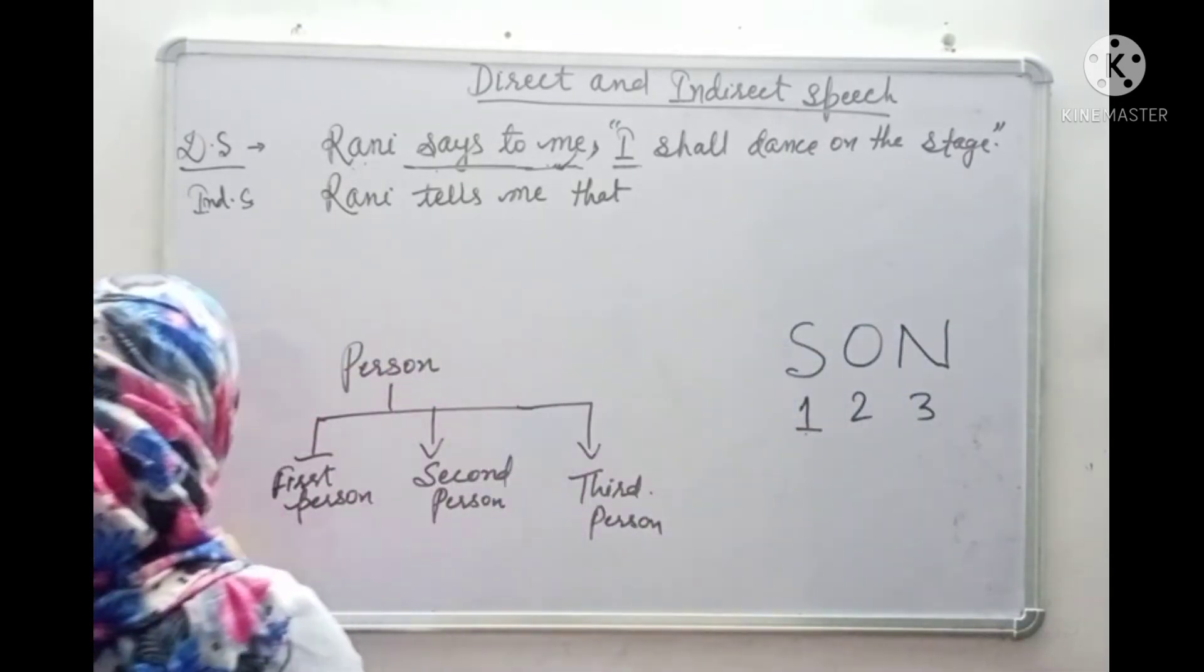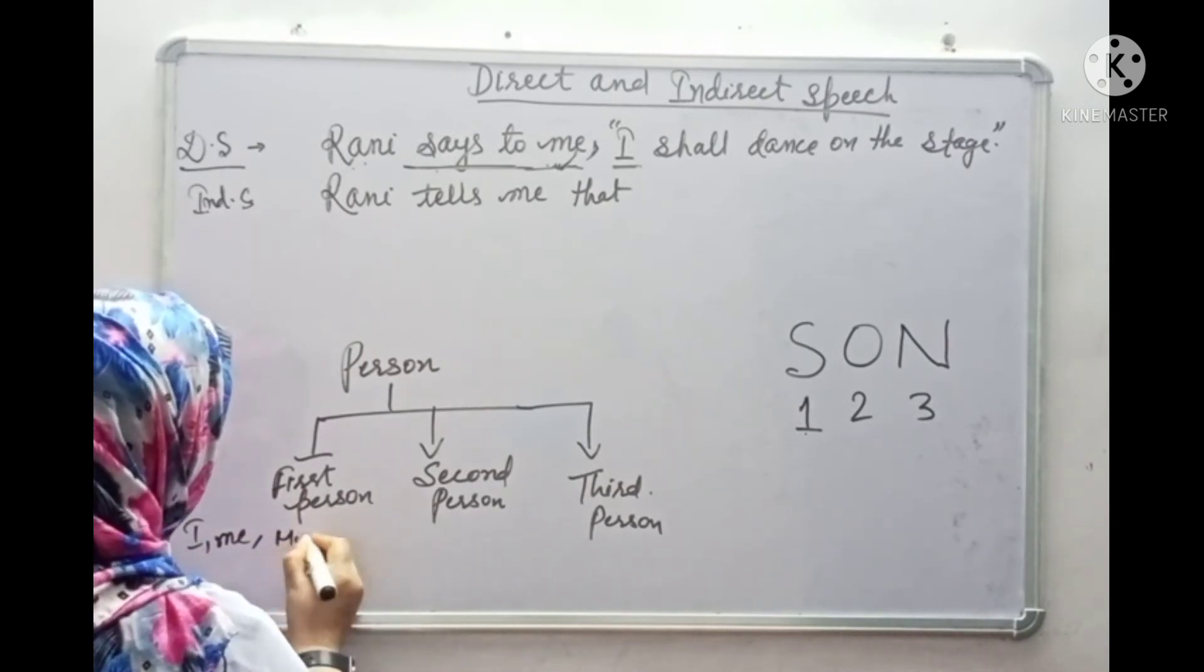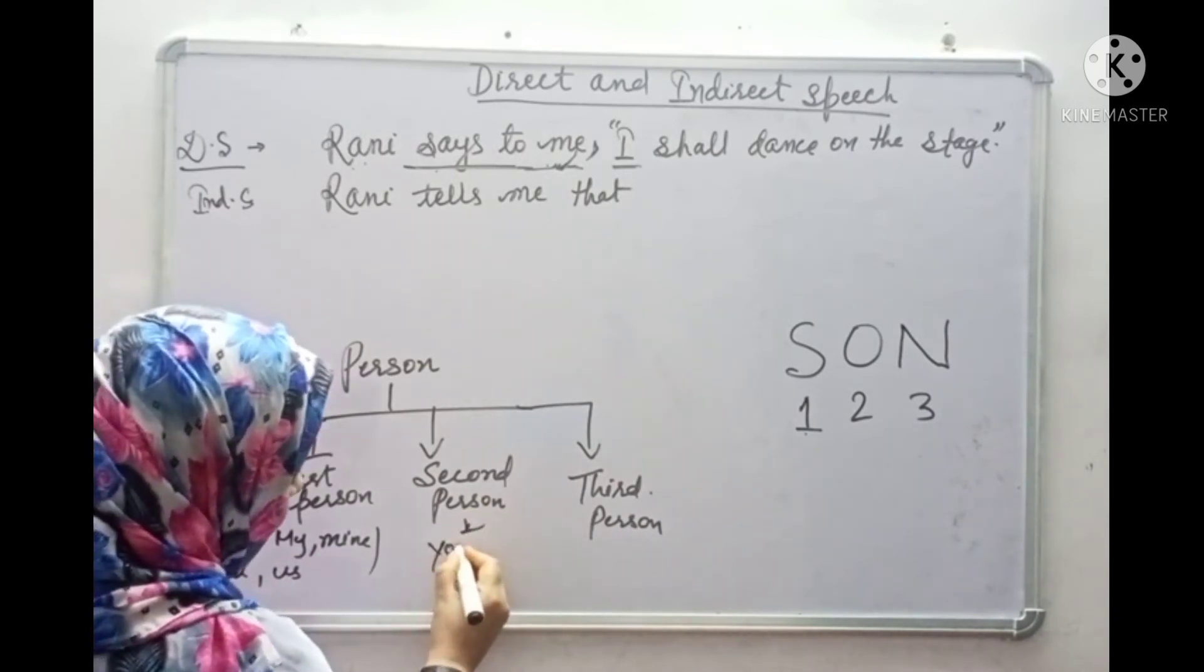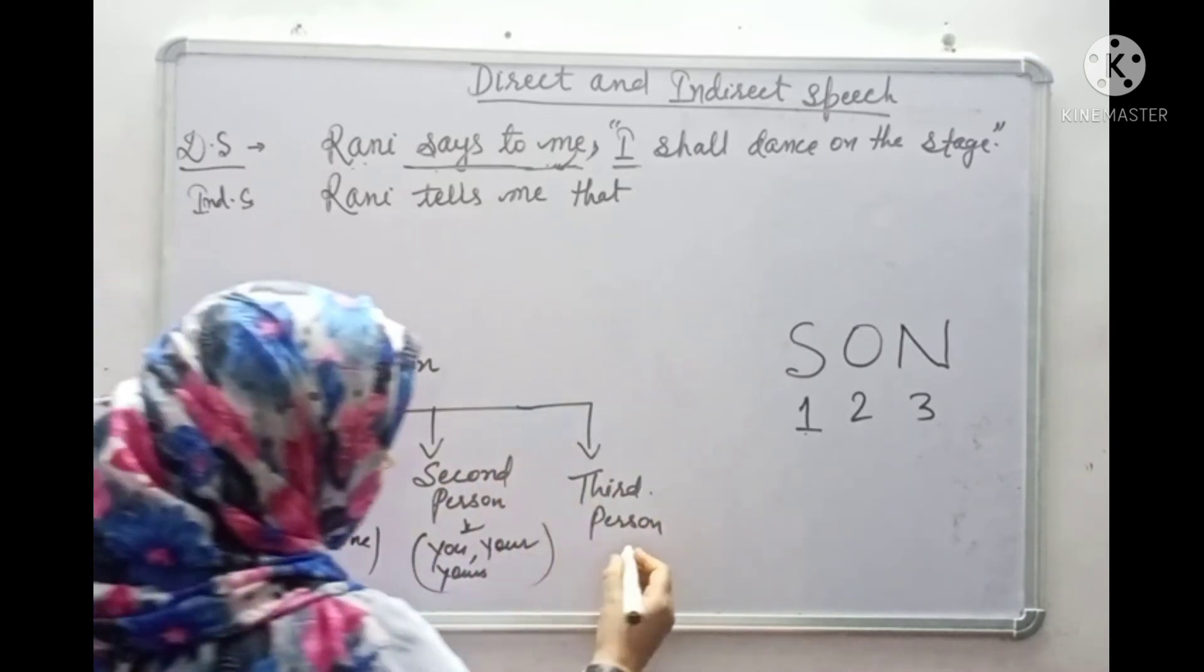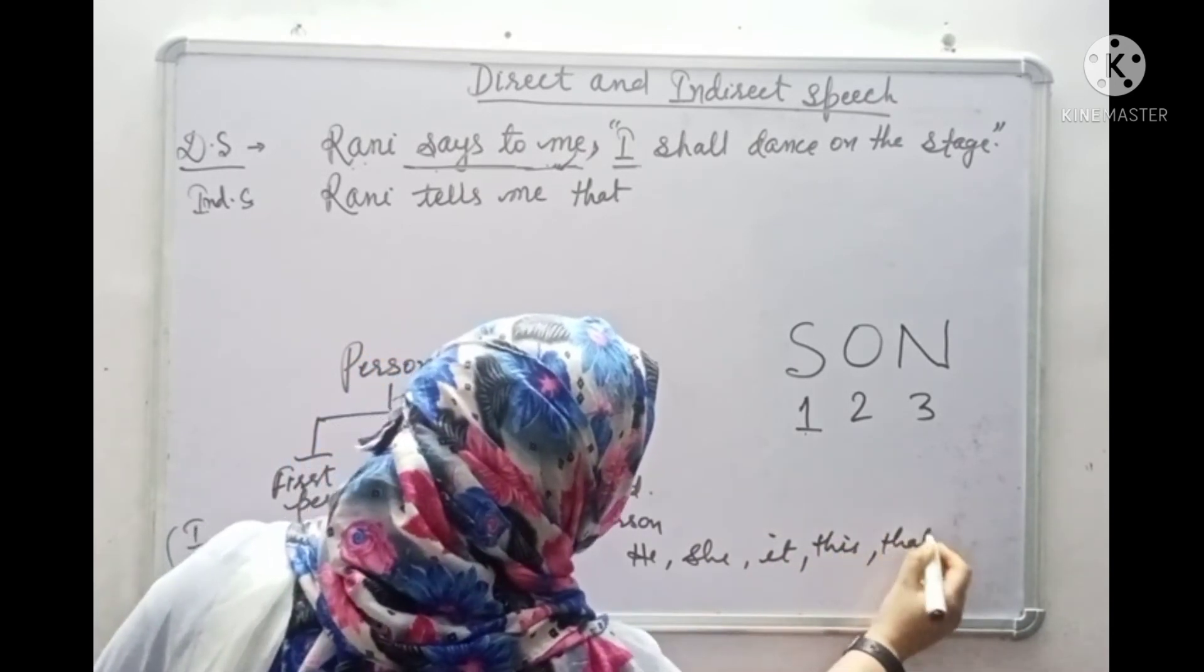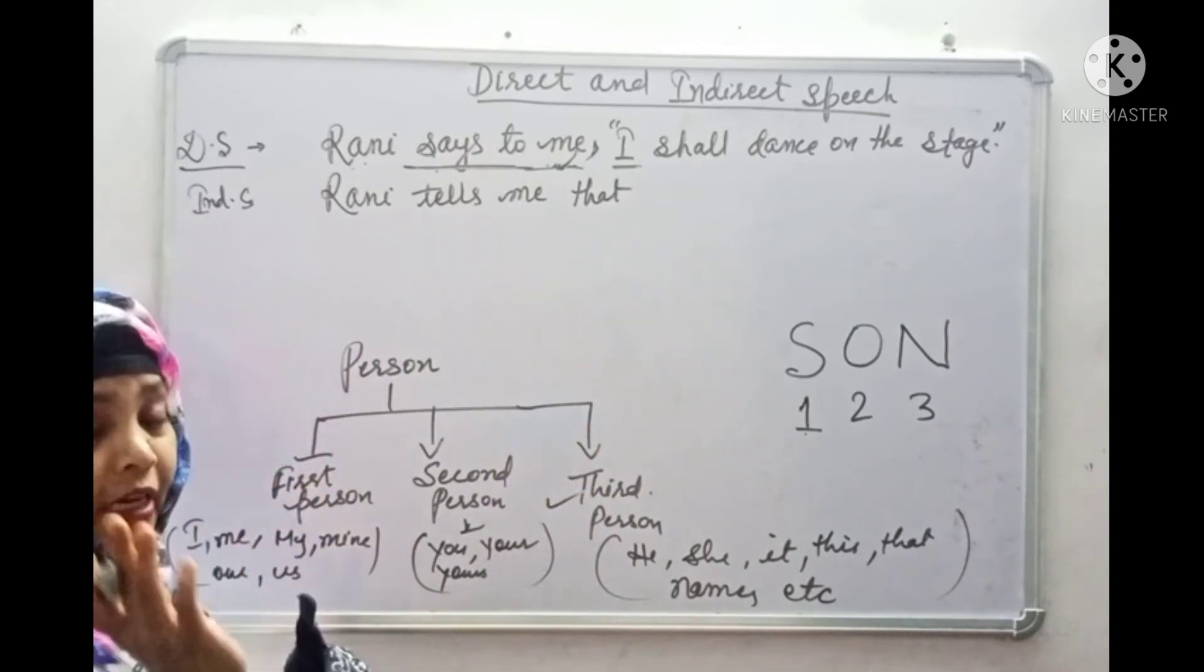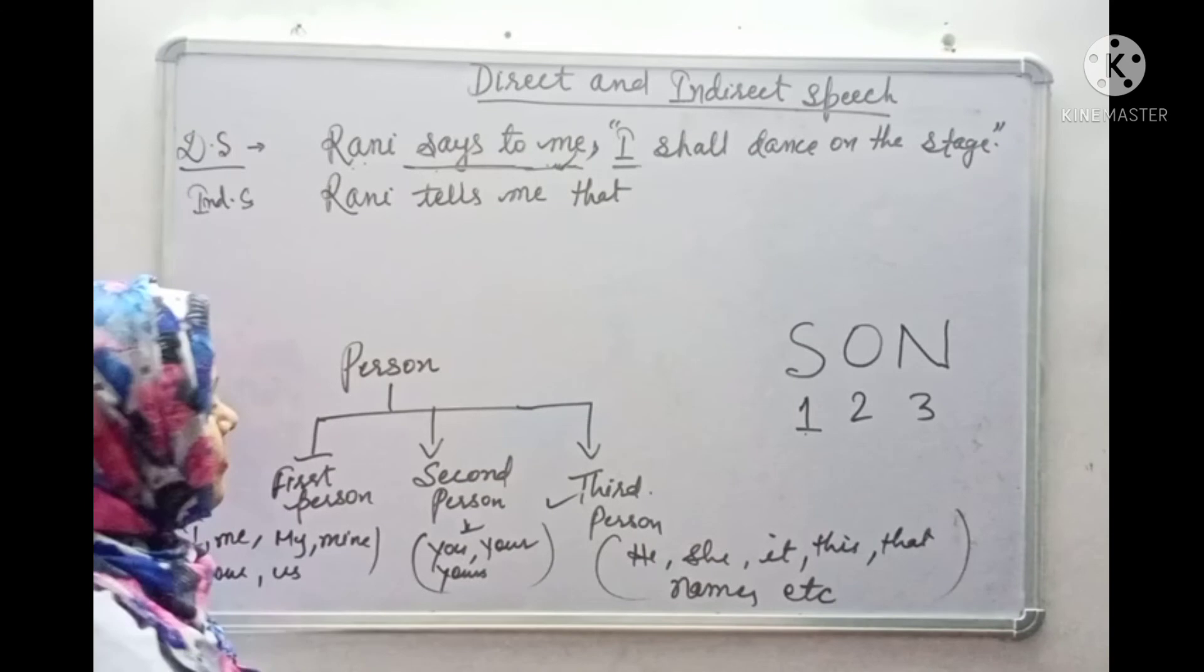So first person includes I, me, my, mine, we, our, us. Second person includes you, your. Third person includes he, she, it, they, that, and names also. You know, when you talk about someone, that comes in the third person. Names can be in it, like Rita or John.